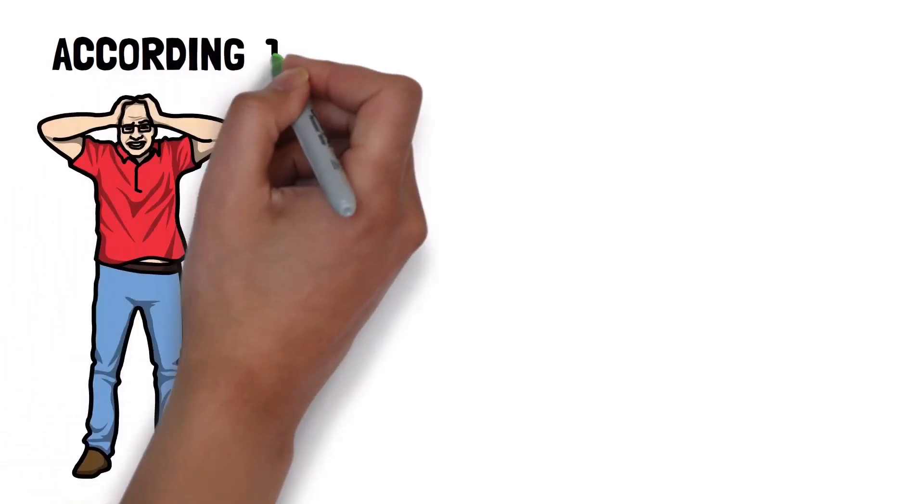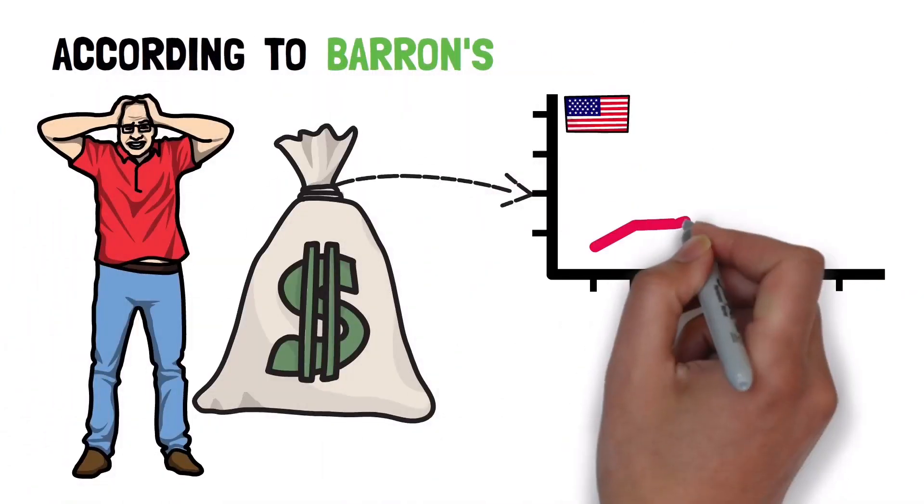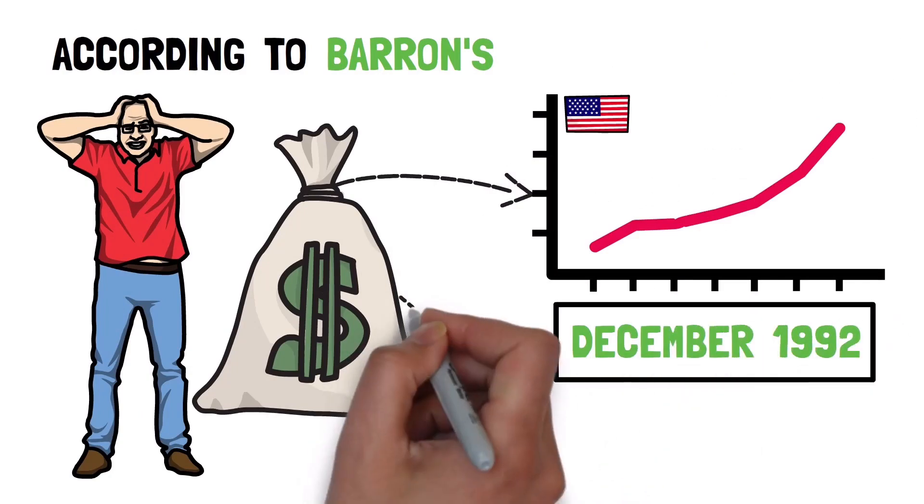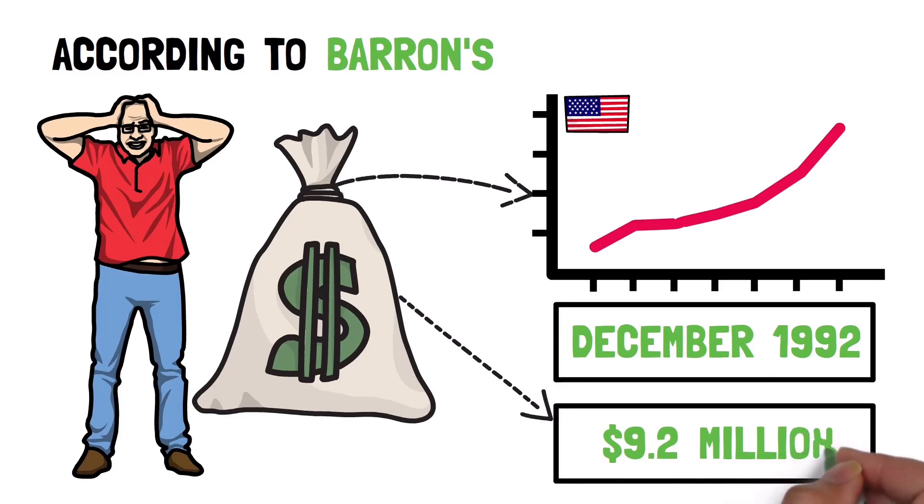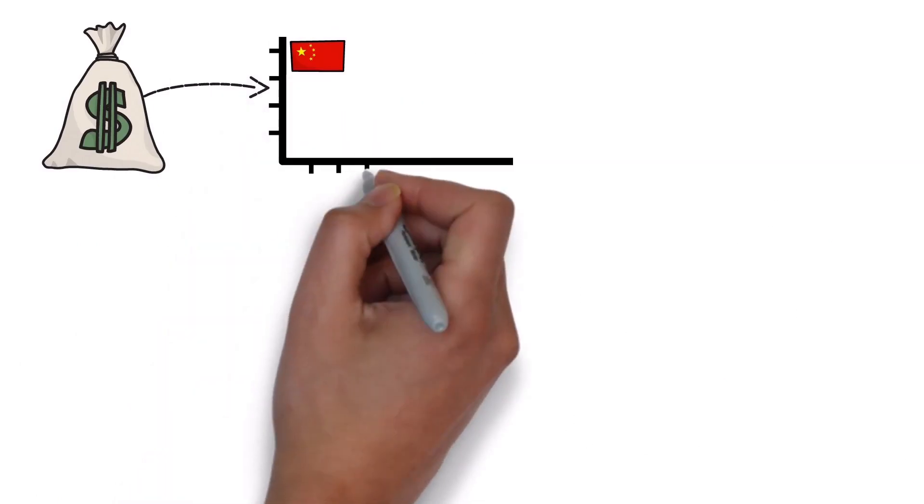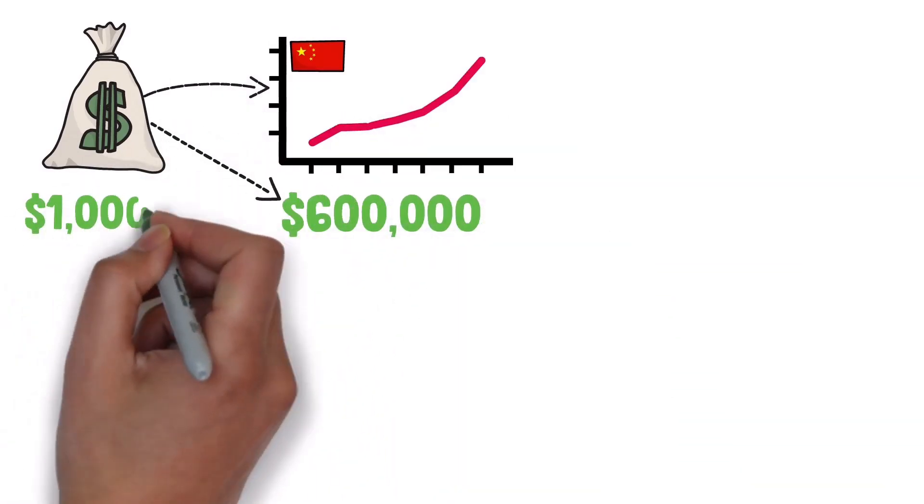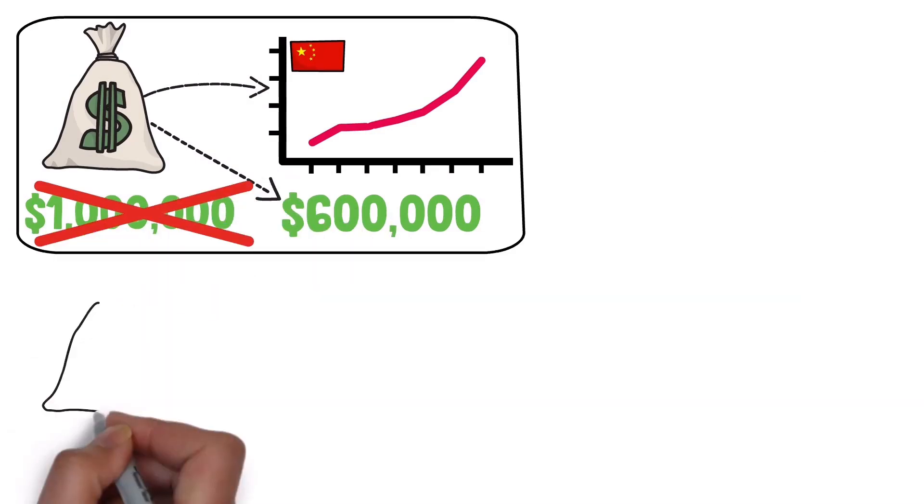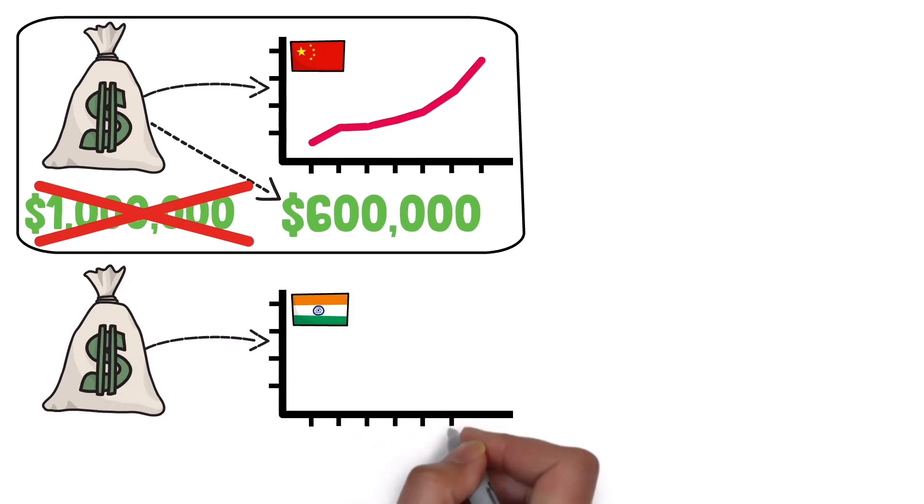According to Barron's, if you had invested $1 million into the US stock market in December of 1992, today you would have roughly $9.2 million. That's a ton of money. But if you had taken that same $1 million and put it into China's stock market, that money today would be worth $600,000. Not million dollars, thousand dollars. And if you had taken that same $1 million and put it into India's stock market, today you would have $8.2 million.